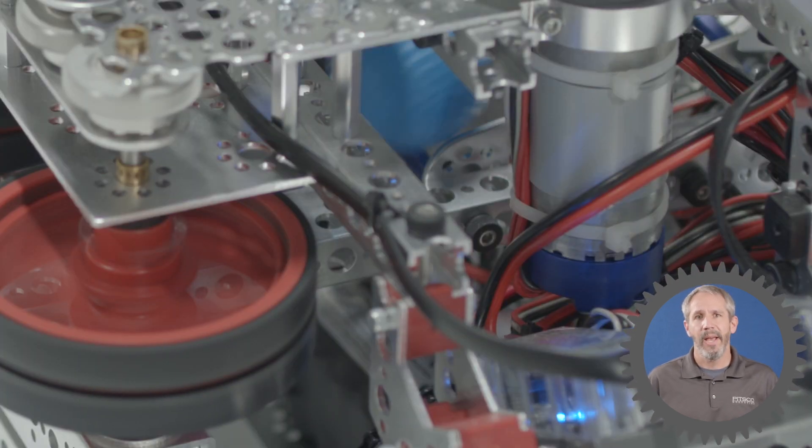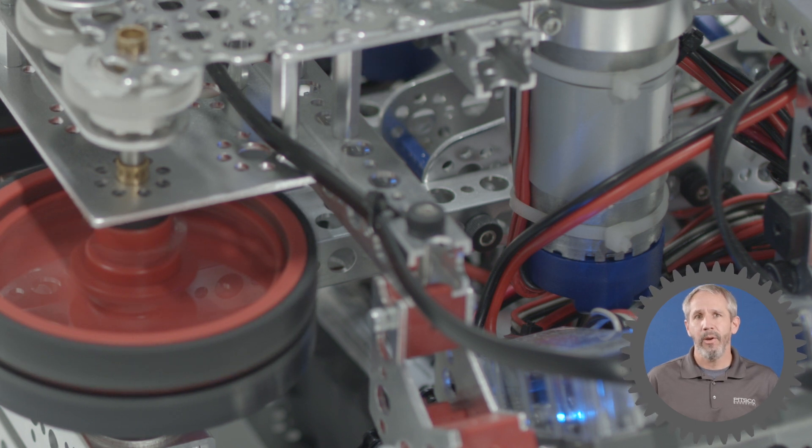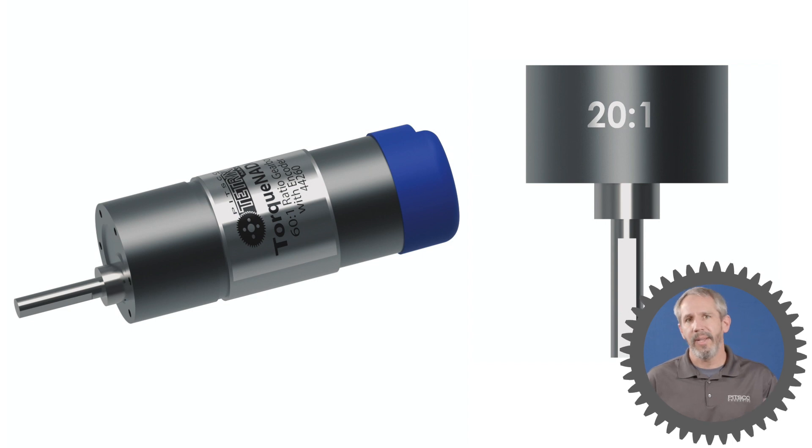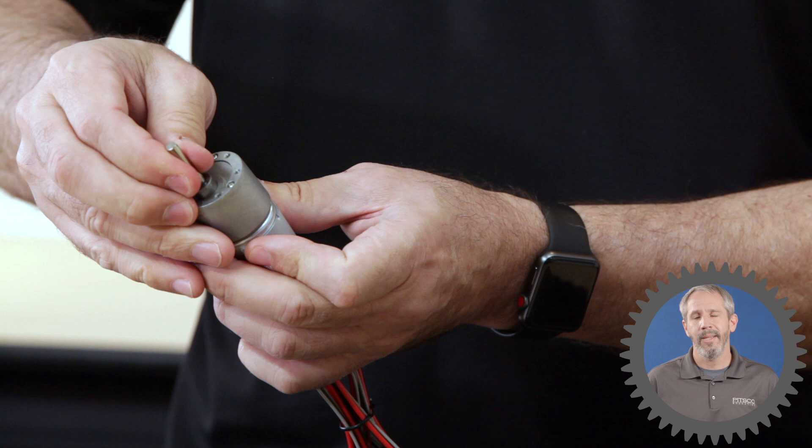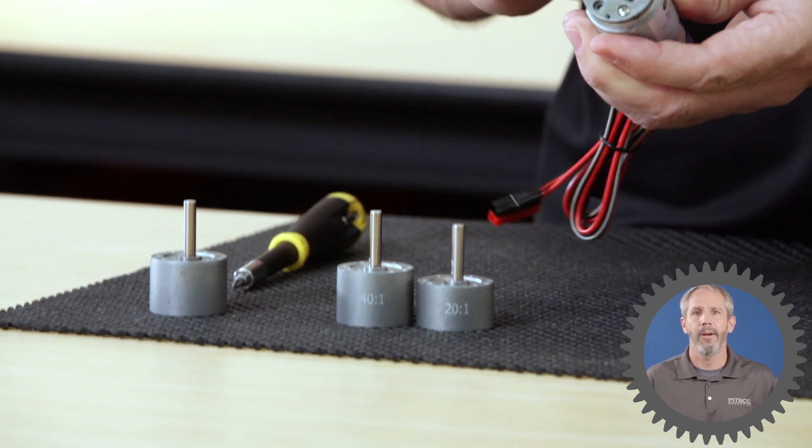Those Torquenado motors have 20 to 1 gearboxes on them. Now a standard Torquenado doesn't come with a 20 to 1 gearbox, it has a 60 to 1 gearbox on it, but by replacing that with a 20 to 1 gearbox, we're sacrificing torque for the sake of speed or rotational speed on our flywheels.